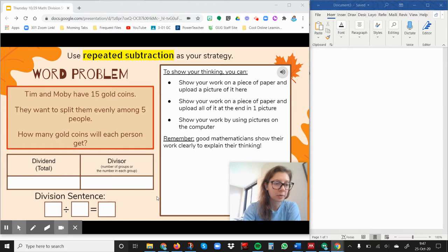So our word problem says Tim and Moby have 15 gold coins. They want to split them evenly among five people. How many gold coins will each person get?